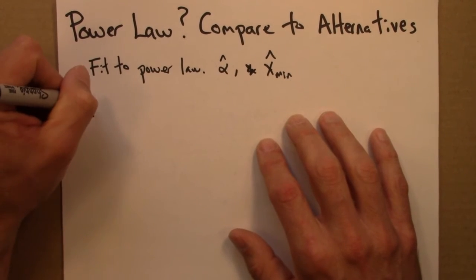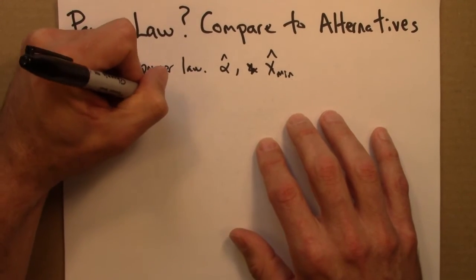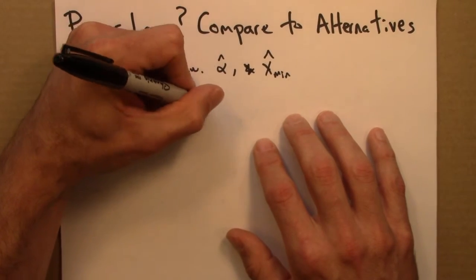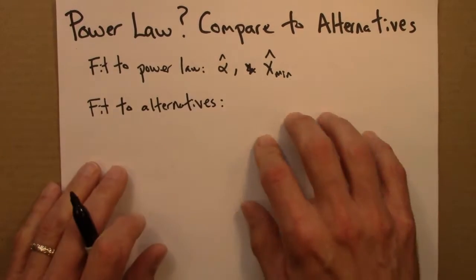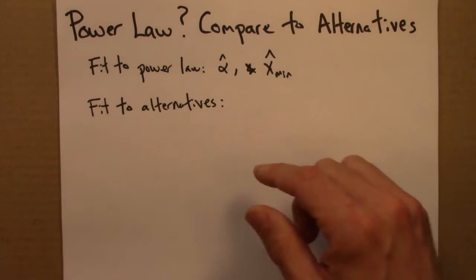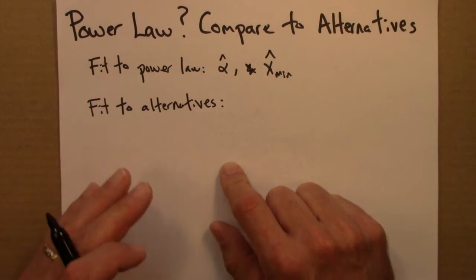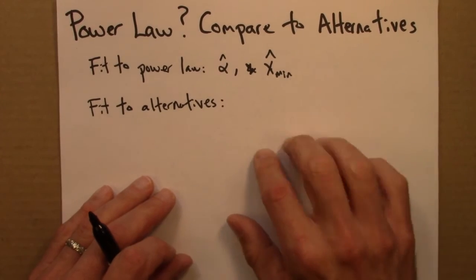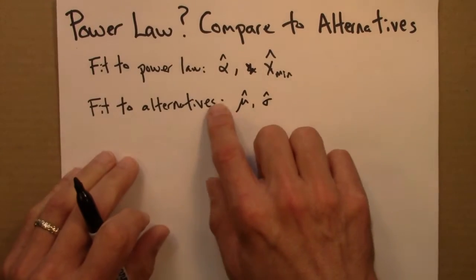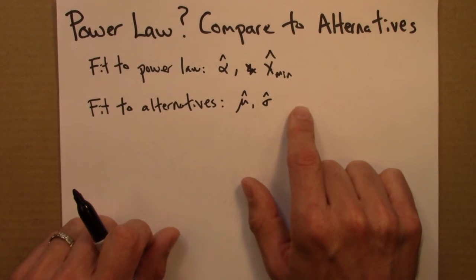Then you might also fit to alternatives. And again, you would get estimated parameters using the maximum likelihood estimator appropriate for that distribution. So if you were doing lognormals, you would do the maximum likelihood estimators for lognormals. A different distribution would have different parameters, some might have one parameter, some two or three.